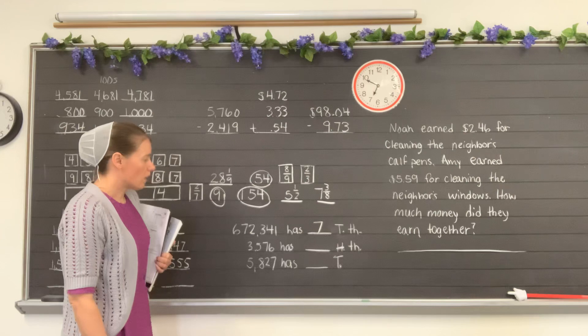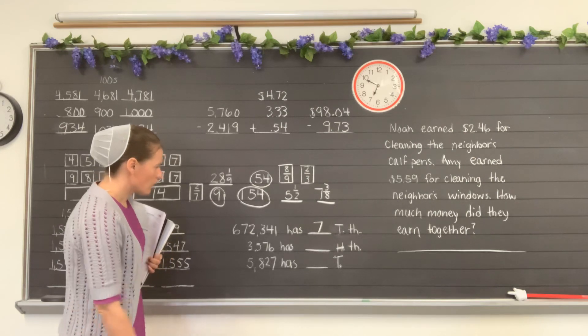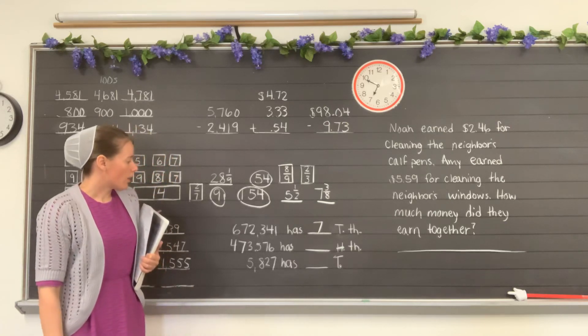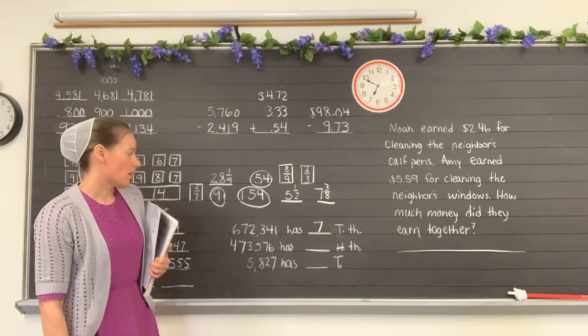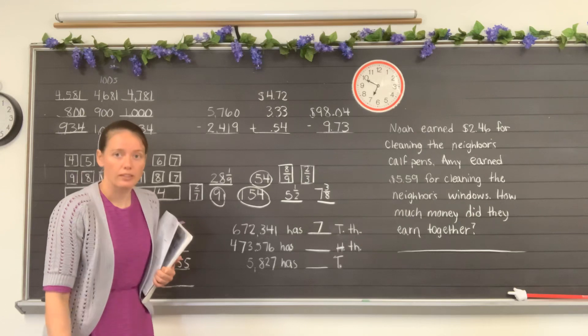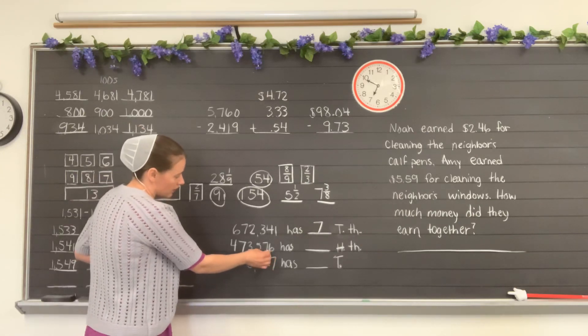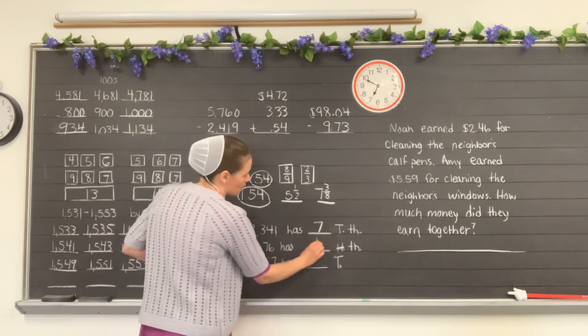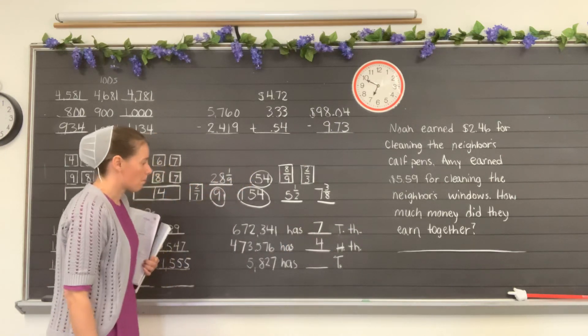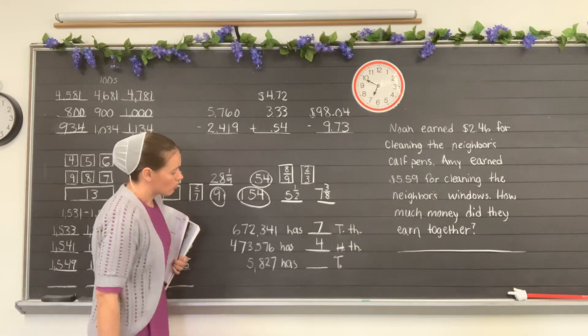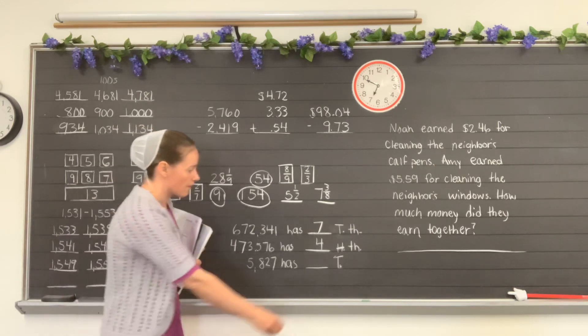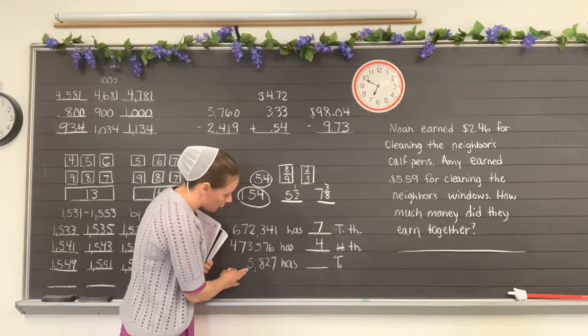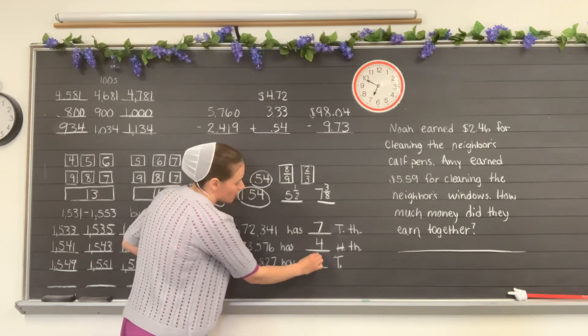473,576 has how many hundred thousands? And so here again we have ones, tens, hundreds, thousands, ten thousands, hundred thousands. So 4 would be in the hundred thousands place. 5,827 has how many thousands? T stands for thousands. So 5 is in the thousands place, right? So we would put 5 in the blank.